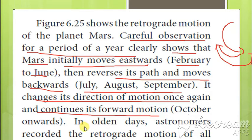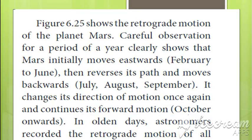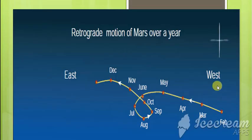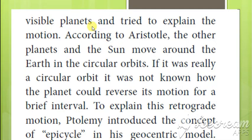In olden days, astronomers recorded the retrograde motion of all the visible planets and tried to explain the motion. According to Aristotle, the other planets and the sun move around the earth in a circular orbit.